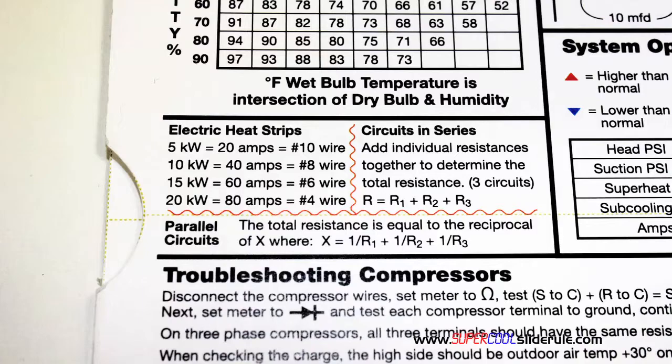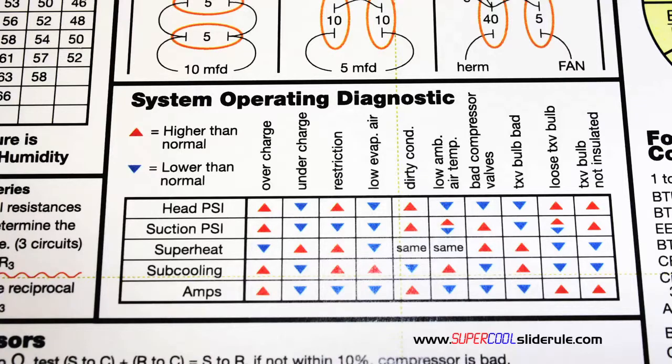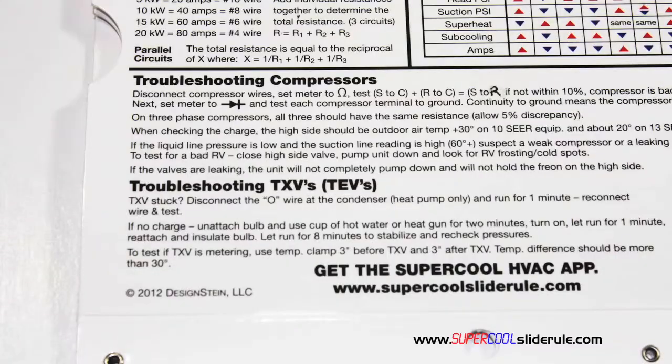The back cover also includes an electric heat strip guide, a complete system troubleshooting diagnostic chart, and how to troubleshoot compressors and TXV.